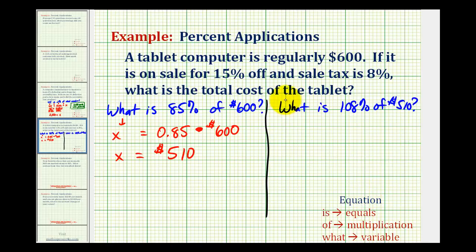Now we'll write another percent equation. So for what, we'll use our variable, we'll call it p this time, is means equals, 108% as a decimal would be 1.08. Of means multiplication, and then we have $510.